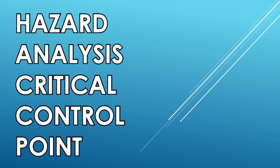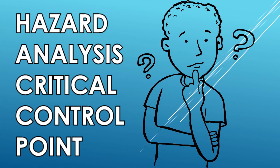Hazard Analysis Critical Control Point, or HACCP. We need to define what HACCP is and its importance. At the end of this lesson, we'd be able to identify what operational changes there are that could require companies and consumers alike to re-evaluate, or put in place if they haven't done so, their food safety plans using the HACCP system.